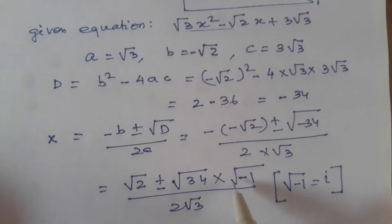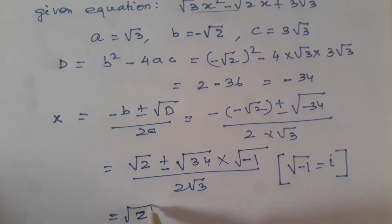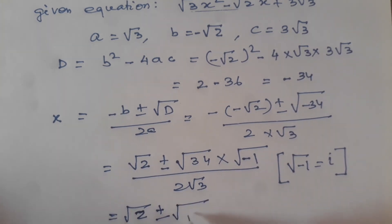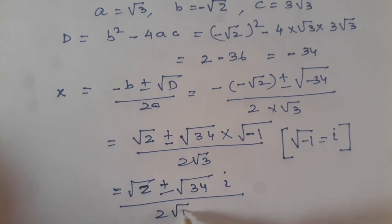So at the place of root under minus 1, we can write IOTA by 2 root 3 and this will be our answer.